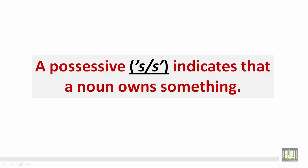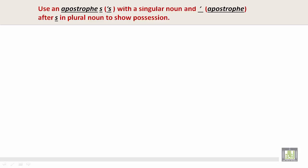A possessive, singular S or plural S, indicates that a noun owns something. Use an apostrophe S with a singular noun, an apostrophe after the S in the plural noun to show possession.